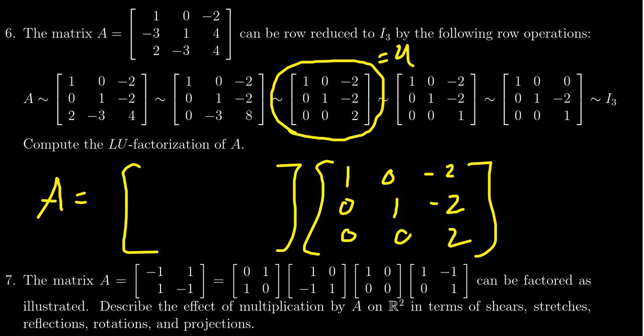And then L is always going to be a unit lower triangular matrix. So we have 1s along the diagonals, 0s above the diagonals. And so now to figure out the remaining terms in L right here.